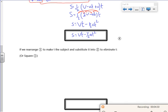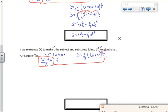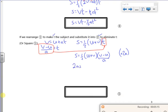So if we rearrange one to make T the subject, that's V minus U over A. I'm substituting into 2. So I'm putting V minus U over A there. So S is a half times U plus V times V minus U over A. If I multiply through by 2A, it gets rid of the 2A on the bottom. So I've got 2AS is U plus V times V minus U.